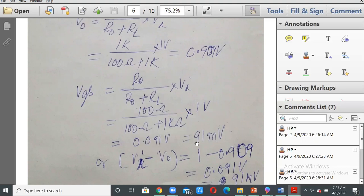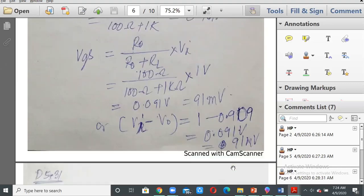You can find it in another way also: VGS is equal to Vi minus V naught, 1 minus 0.909, that will be 0.091, and that will be 91 millivolts.